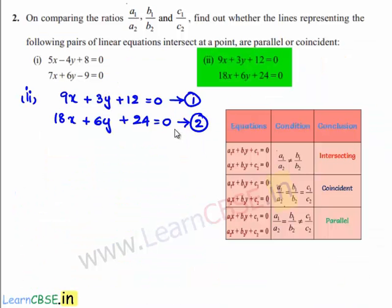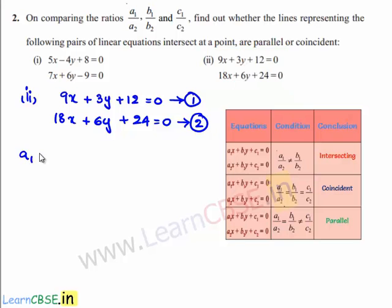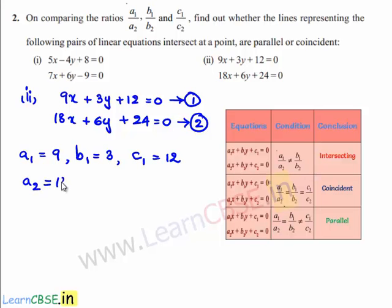If we compare the given set of linear equations with the standard equations a1x plus b1y plus c1 is equal to 0 and a2x plus b2y plus c2 is equal to 0, we get a1 is equal to 9, b1 is equal to 3, and c1 is equal to 12. And the values of a2, b2, c2 are: a2 is 18, b2 is 6, and c2 is 24.